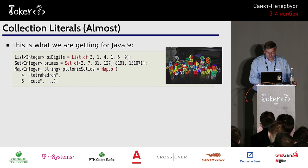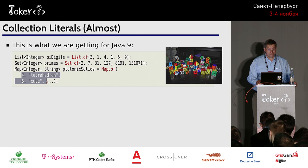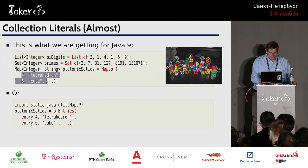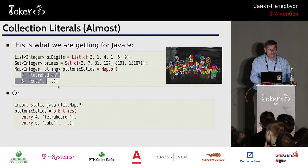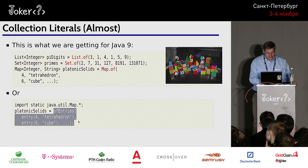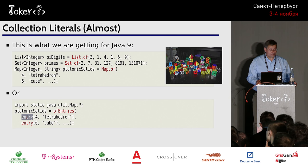With maps it's a little funkier. We make a map and don't get any arrows or colons — we just list the key and value, another key, another value, and so on. There's a second version of maps using Map.ofEntries that's really only tolerable with a static import. Then you list each entry using the entry() factory method.